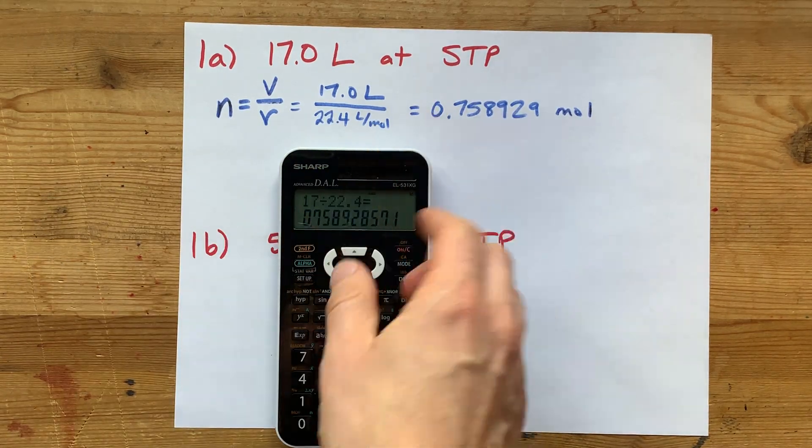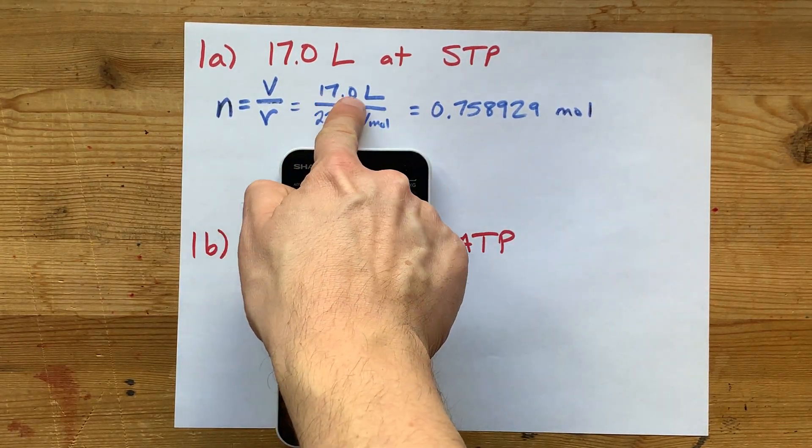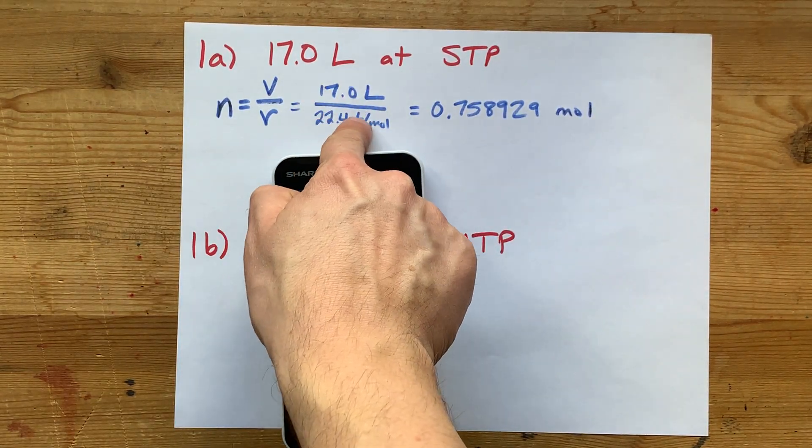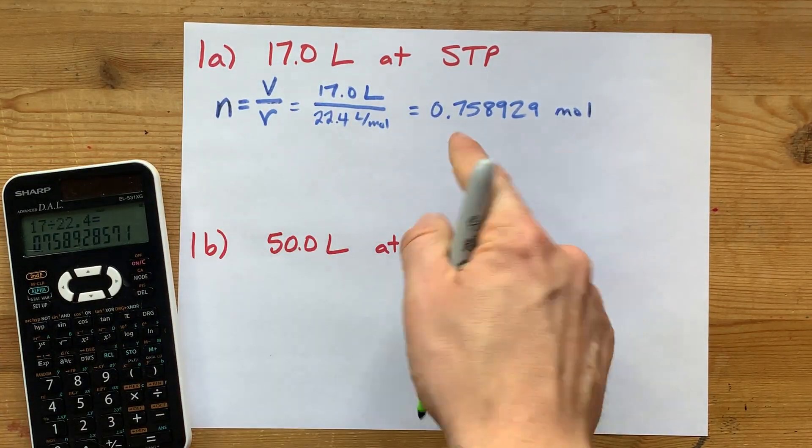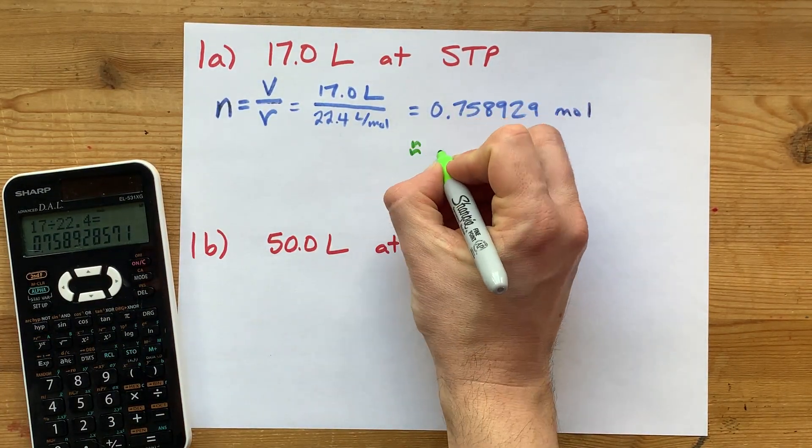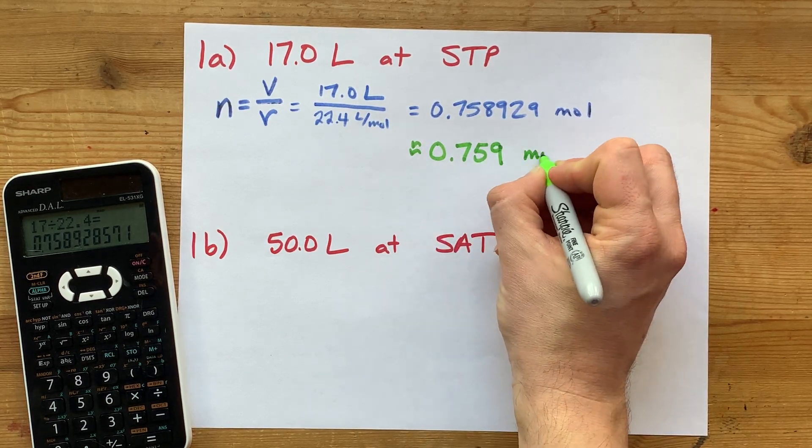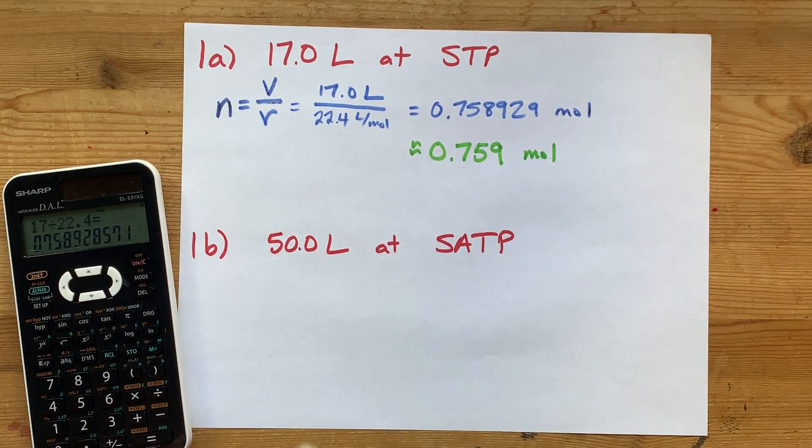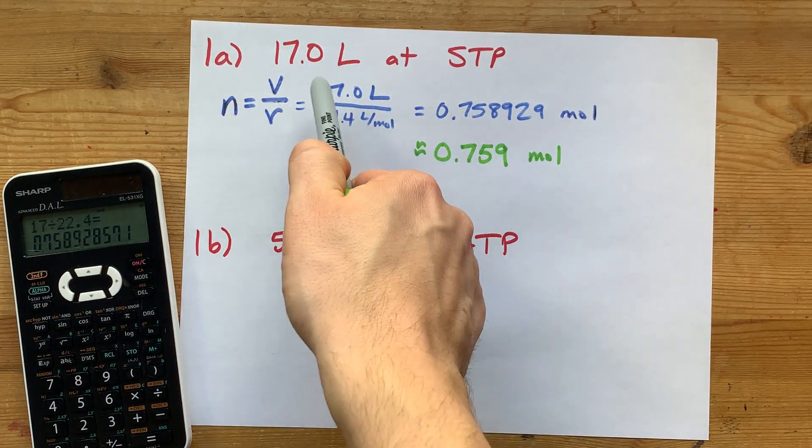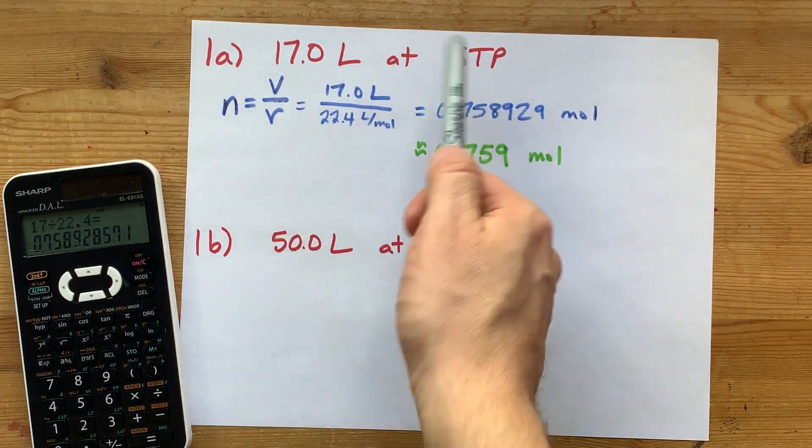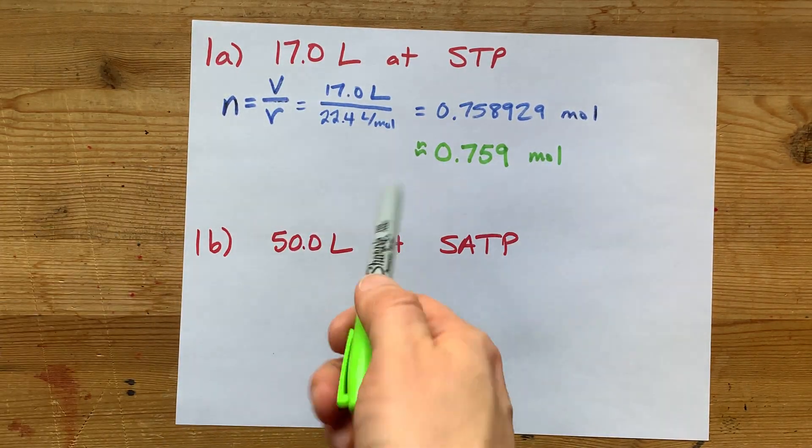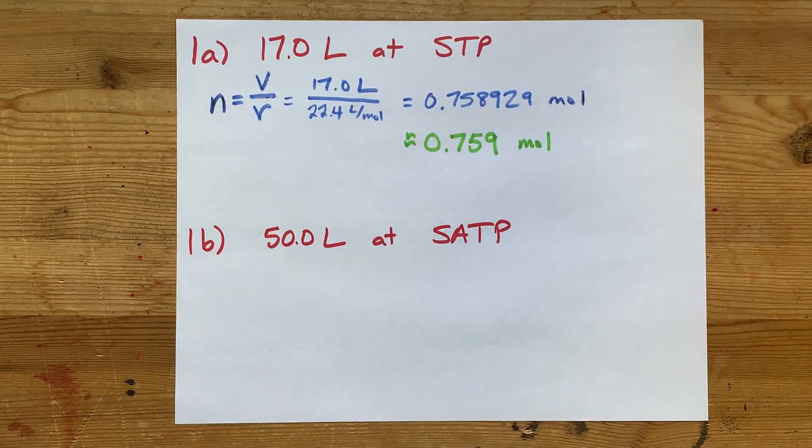You're left with moles. For significant figures, that's three sig figs in 17.0 and three in 22.4. So I'll round to three significant figures for my final answer: 0.759 moles. That's the number of moles in 17 liters of gas at STP.